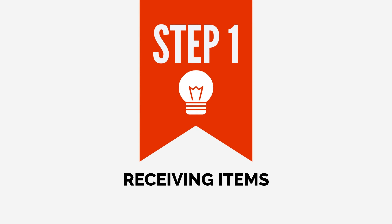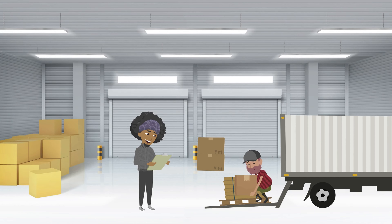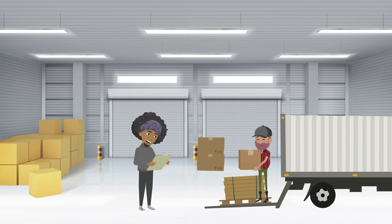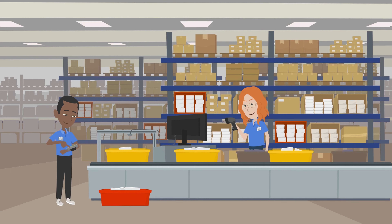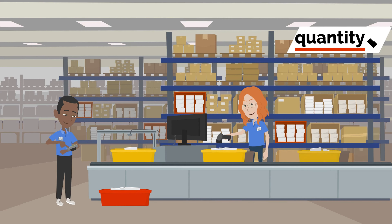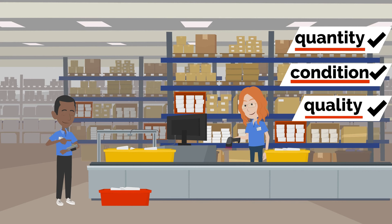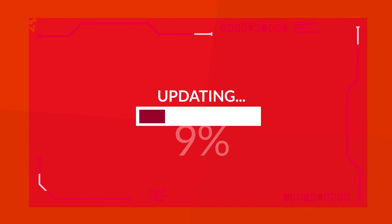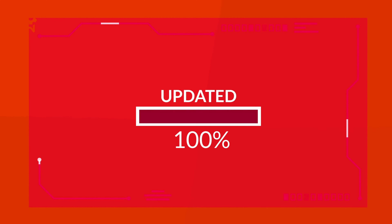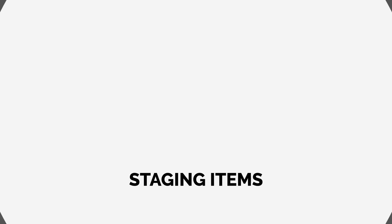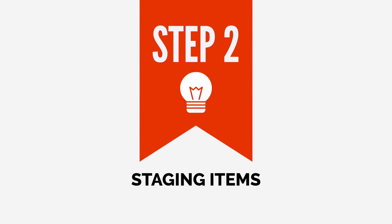Step 1: Receiving items. The first step in inventory flow is receiving items from suppliers or manufacturers. This involves verifying the quantity, condition, and quality of the items being received and updating the inventory management system accordingly.